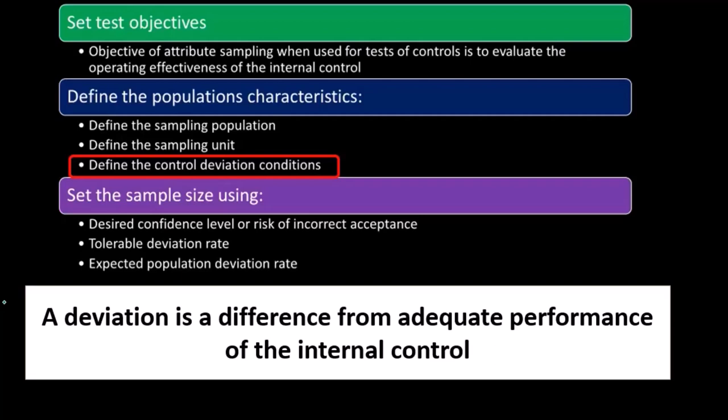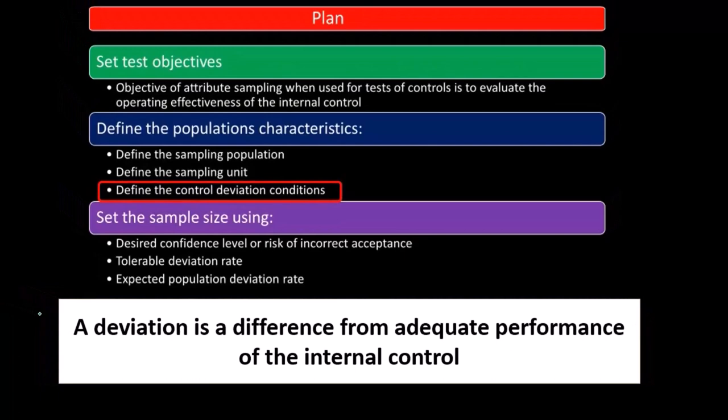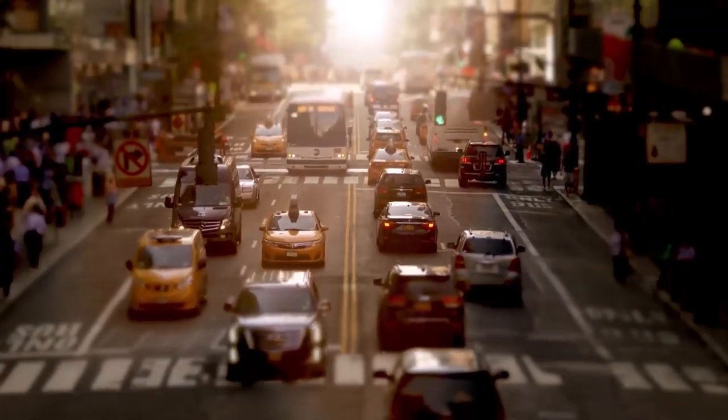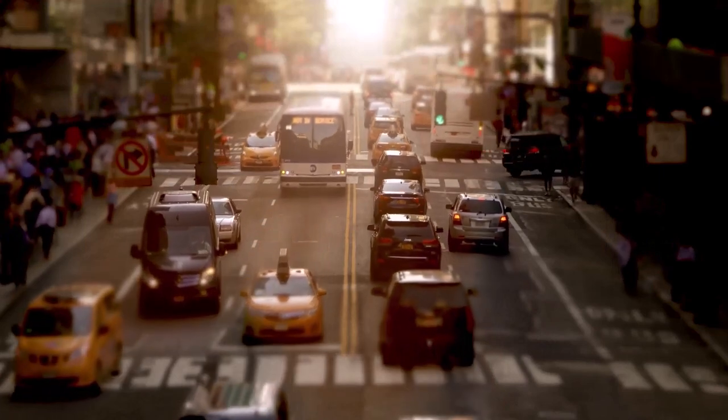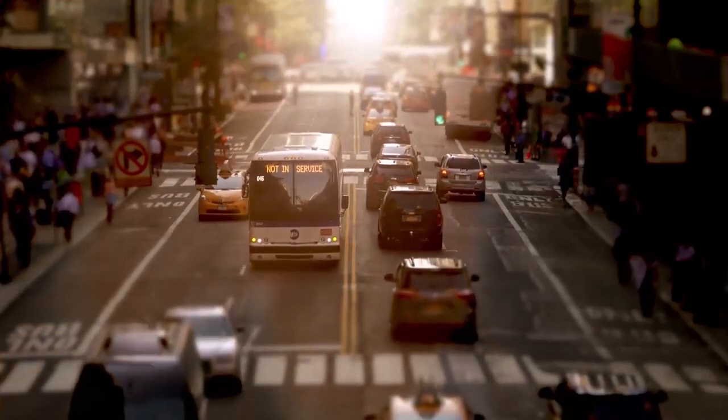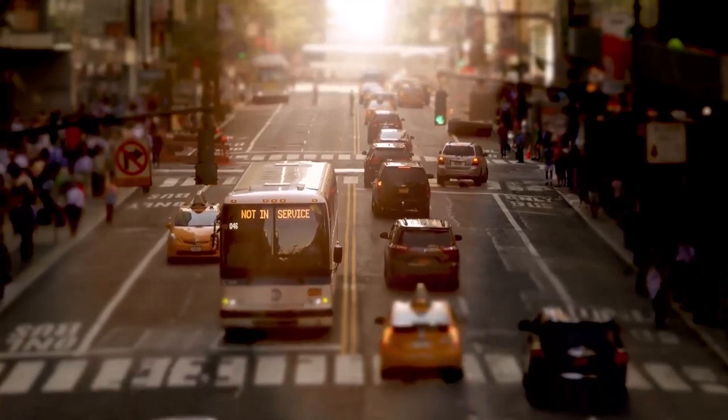We'd have to say there's an item that we have found that's a deviation. This doesn't mean that the whole population is now wrong, because we might expect, depending on the type of controls, that we will have some deviation. But we're testing the amount of deviation within that basic sample size that we're then going to apply to the entire population.